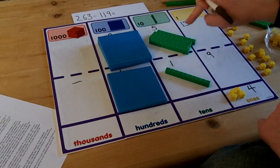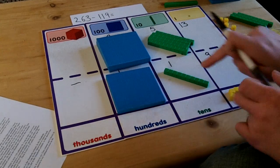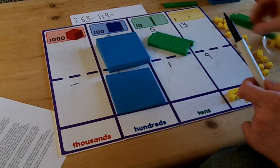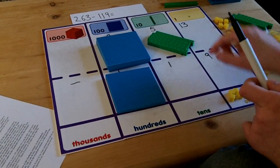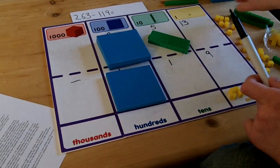In the tens column I've now got 50 subtract 10. If I take away the one ten from here, I must also take away one ten from here.